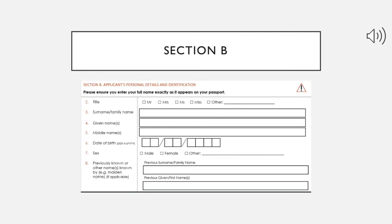In the next section, Section B, you need to provide your personal details — starting with your title, which gives them an idea about your marital status, then your family name, middle name, and actual name. All of this should be exactly the same as provided in your passport. There should be no variation between the names given in the form and the proof you are providing, which is the passport. You also need to mention your date of birth and gender.